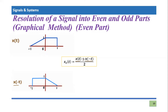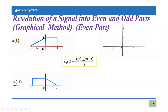Now we have both x(t) and x(-t), and according to this formula we need to add them up. Since we are doing this graphically, we need a separate graph. Let's say this is the graph where we add these two signals. At t = -1, x(t) has a value of zero and x(-t) has a value of around one.